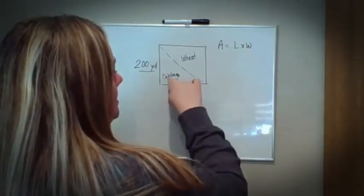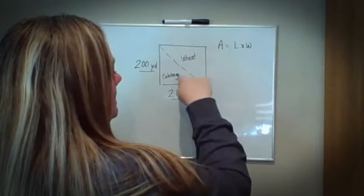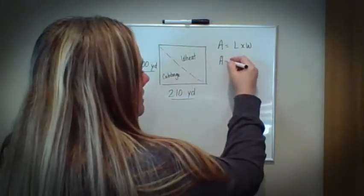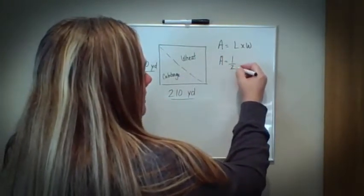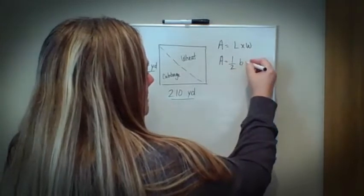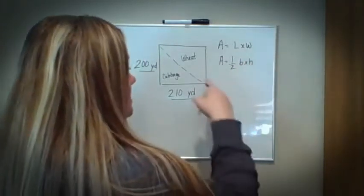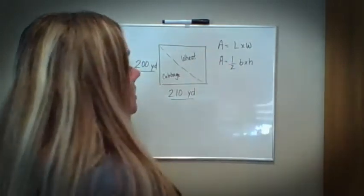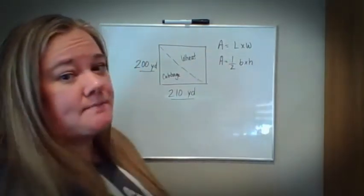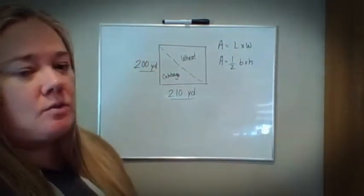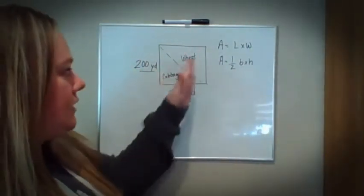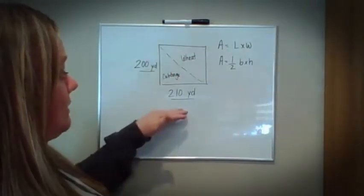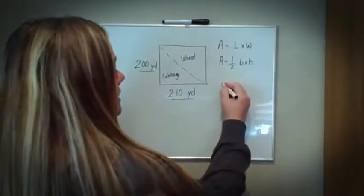If we only want to define for cabbage, you should recognize that that's a triangle. Area for a triangle is one half base times height, or essentially half of whatever your rectangle is. But in this case, we're not looking for one or the other — we're looking for both combined. So I'm simply going to take my length and multiply it by my width.